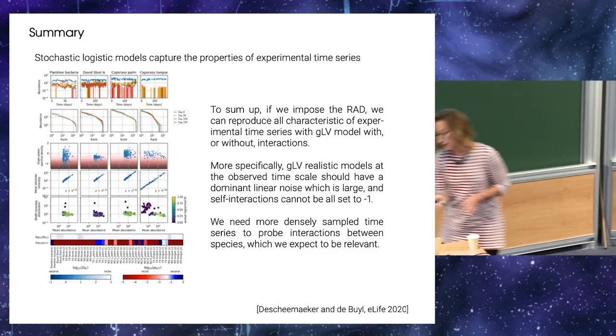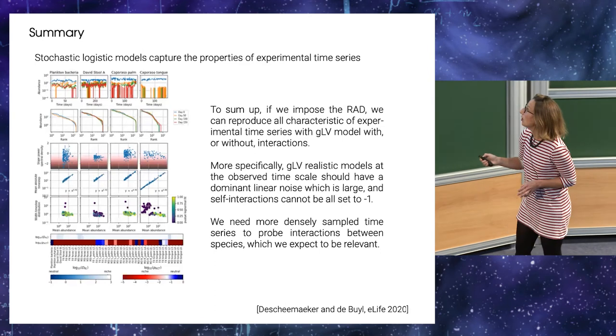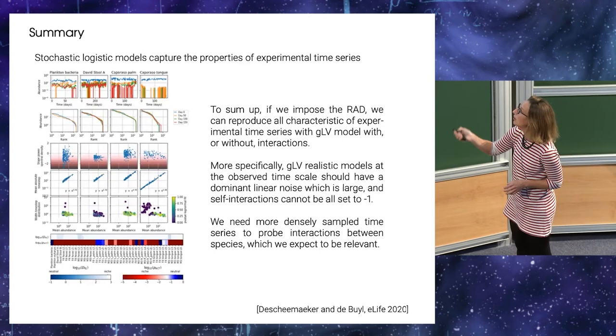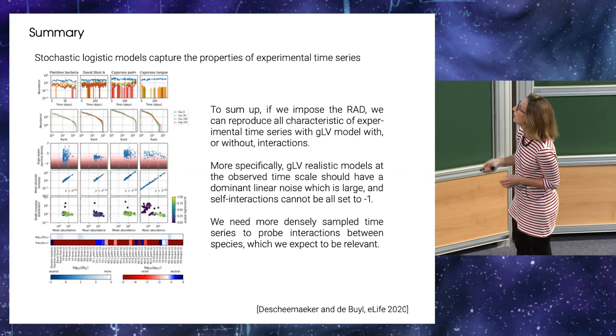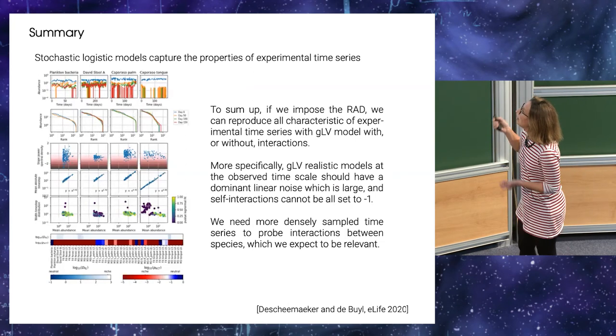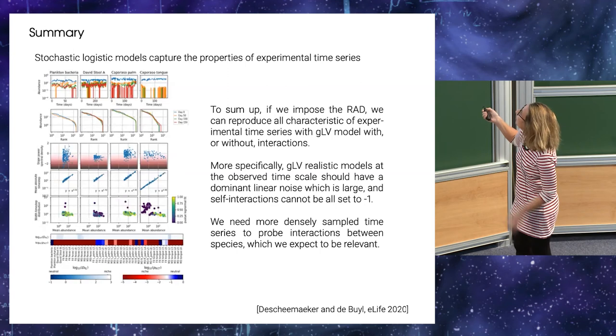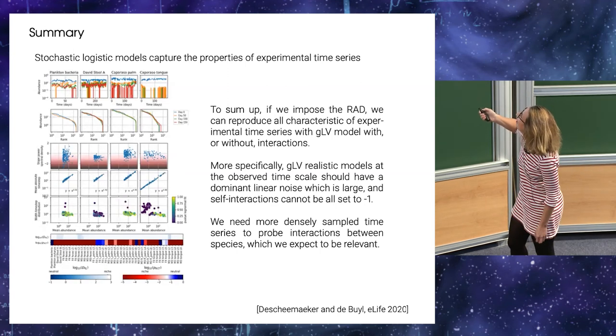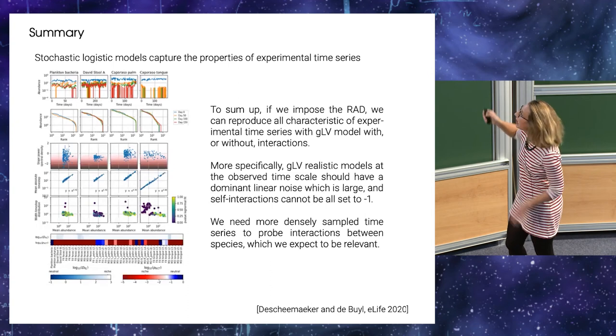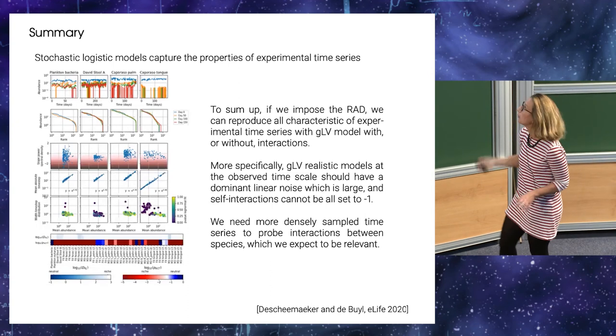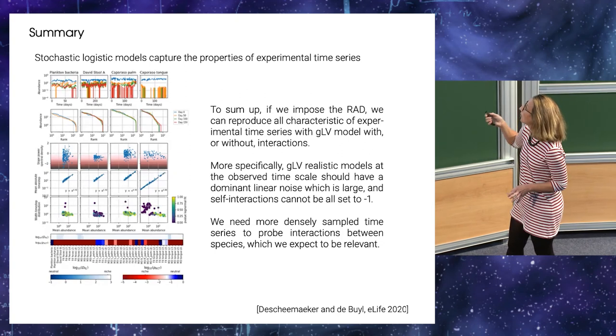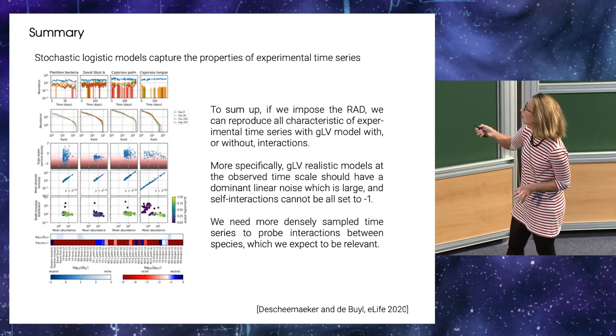So to summarize this, all, like I put here, each column is different communities. And we see always the same typical behavior of these communities. So basically at the observed time scale, we can reproduce all these things with a logistic model. But, so the message, we don't say that interactions are not important, but we say that they are not important at the observed time scale.